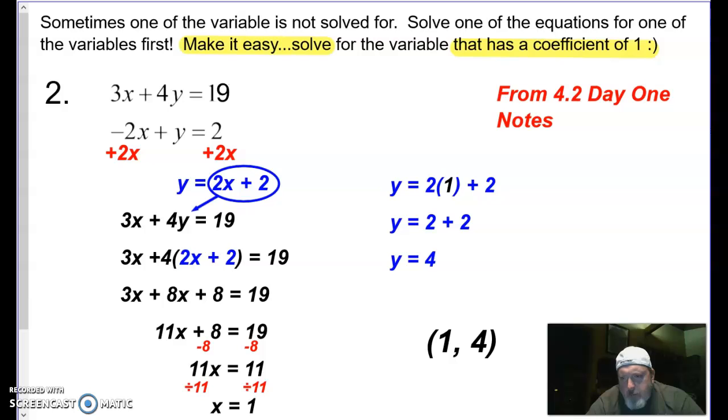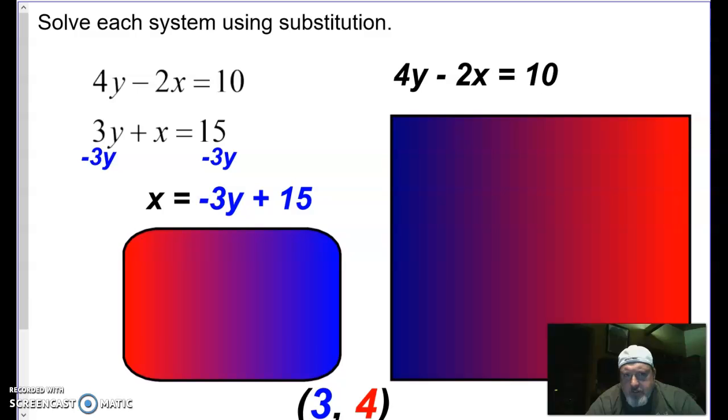And we'll also have a couple word problems that will do the same deal. All right, so this next example here, we're given two equations, 4y minus 2x equals 10 and 3y plus x equals 15. Notice this equation has 1x and so that's where we're going to focus. We're going to move this 3y over to the other side by subtraction and now we have this solved for x.